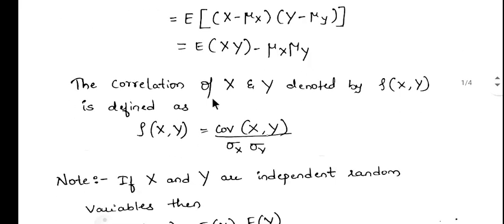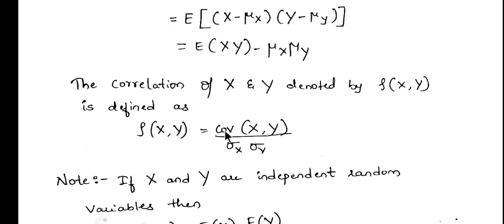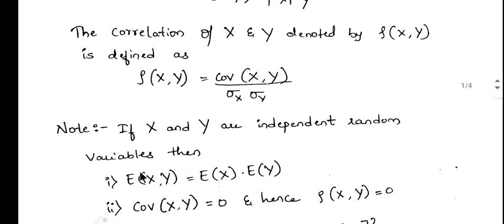Now the next definition: correlation. The correlation of x and y, denoted by rho(x, y), is defined by rho(x, y) which is equal to covariance of x comma y divided by sigma_x times sigma_y.